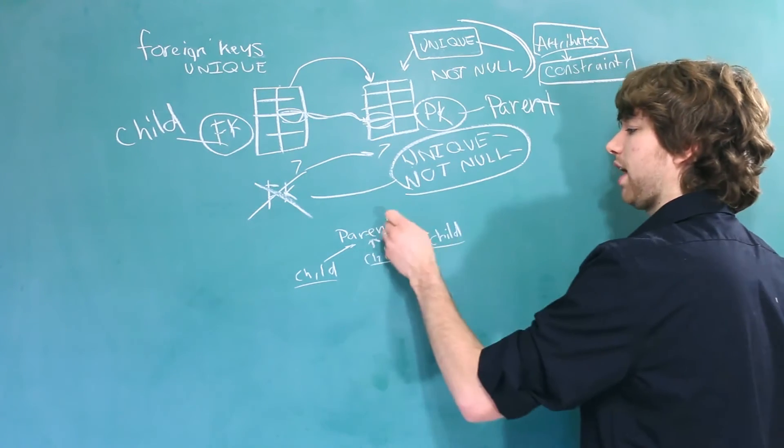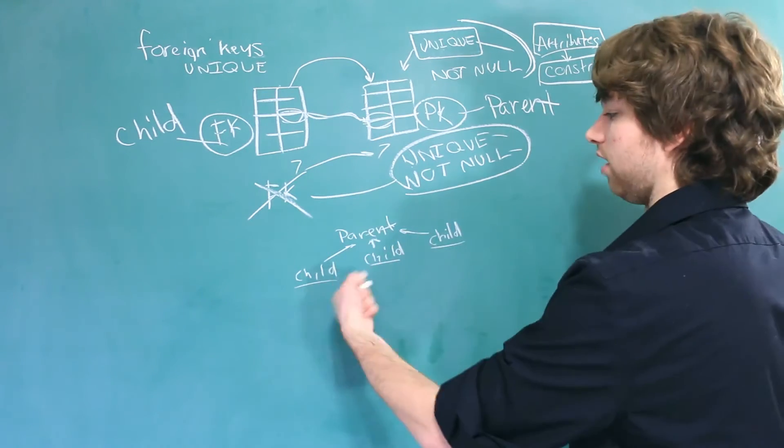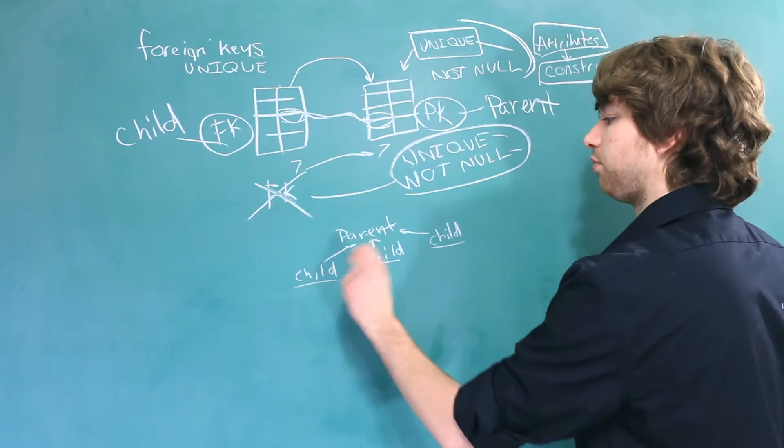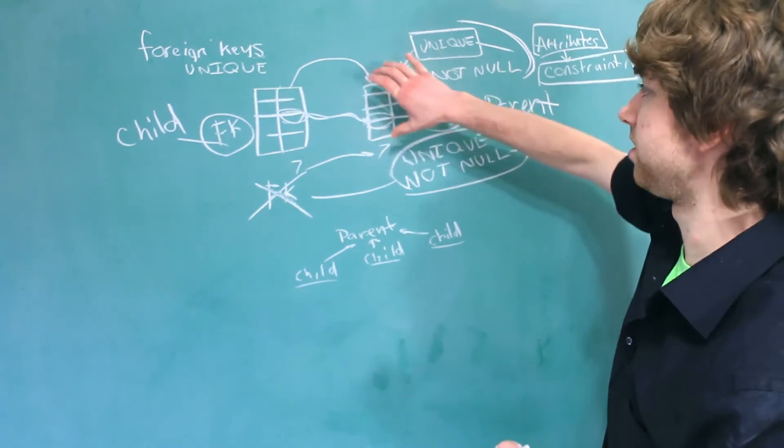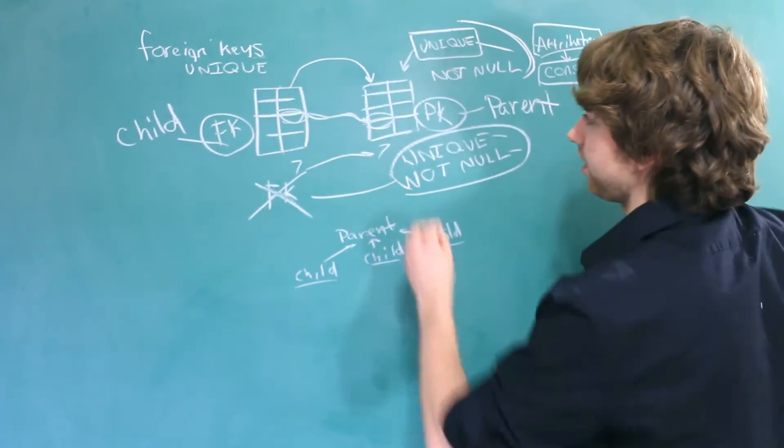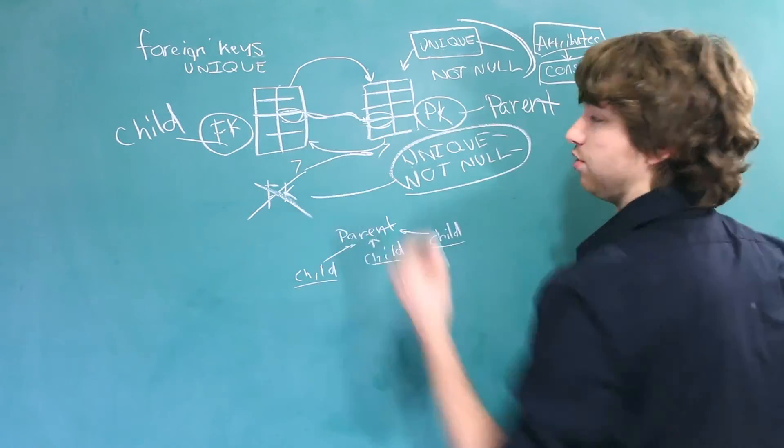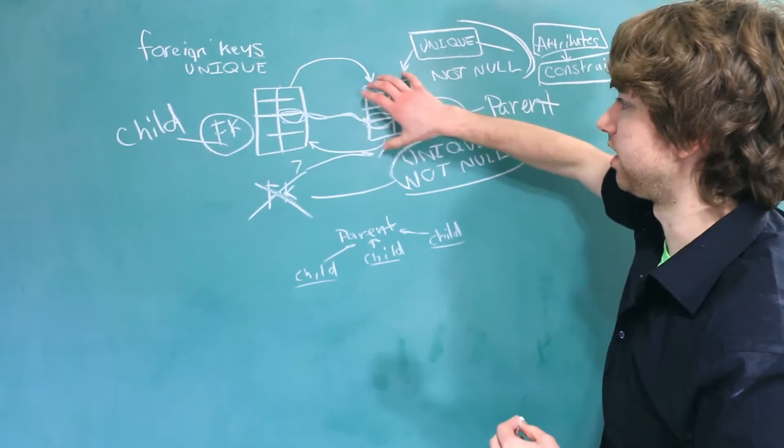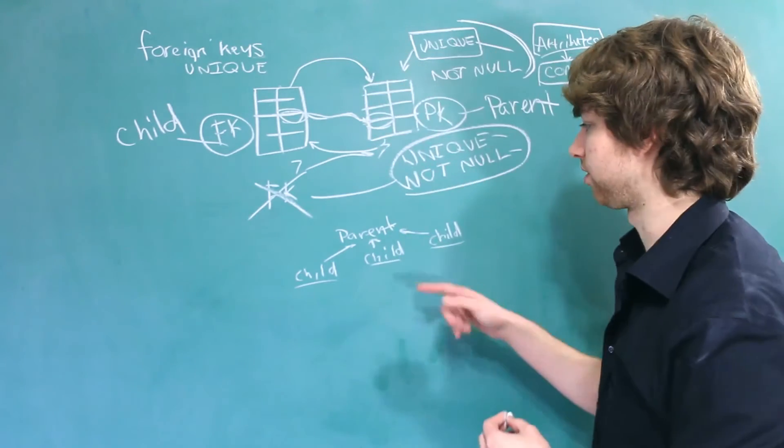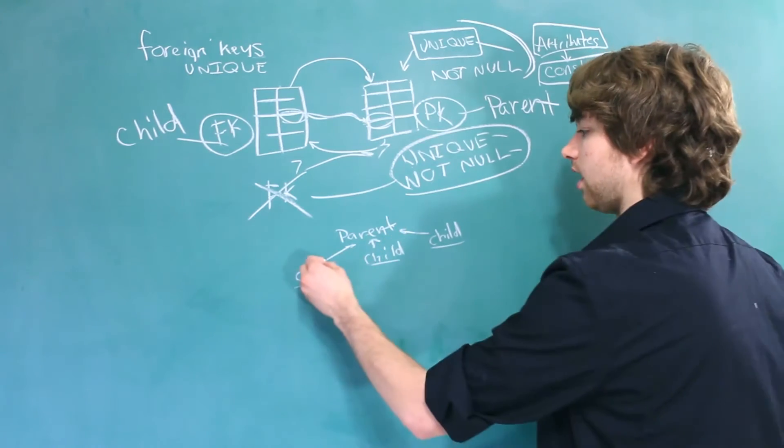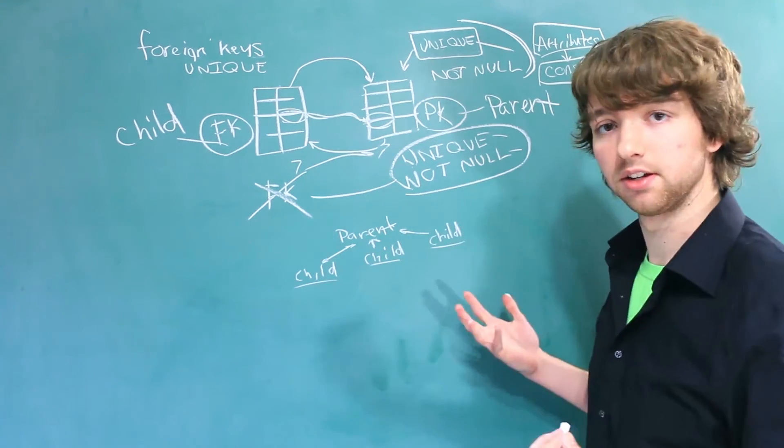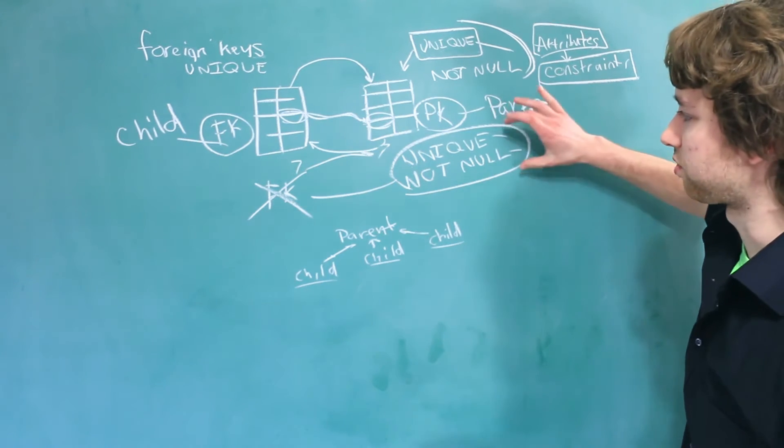And theoretically, the parent doesn't have any knowledge of the children. That's because the foreign key is in the child table, not the parent table. So within this parent table, there's nothing that references back to the child. It's alone. It's segregated. It doesn't know of the child. So because of that, I drew the arrows pointing at the parent and not both ways like that. When we draw it this way, it's a lot easier to think about these constraints.